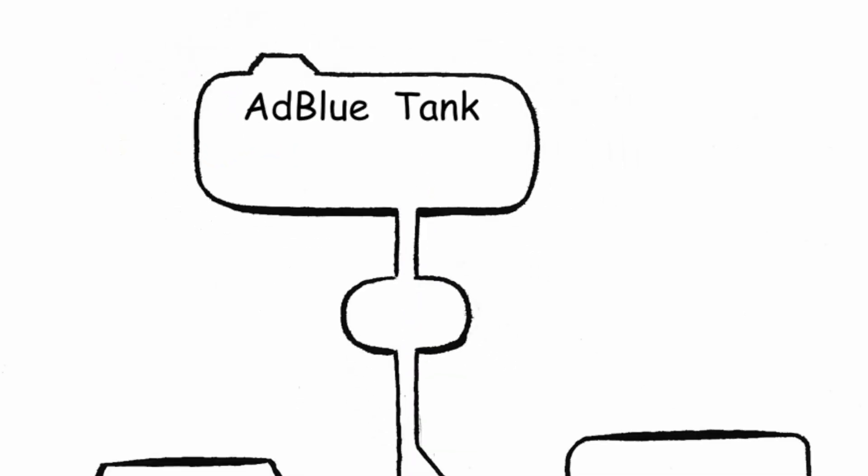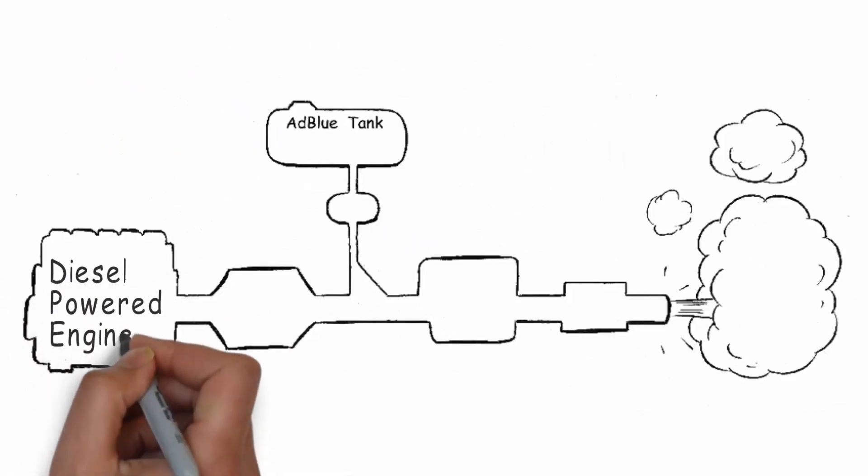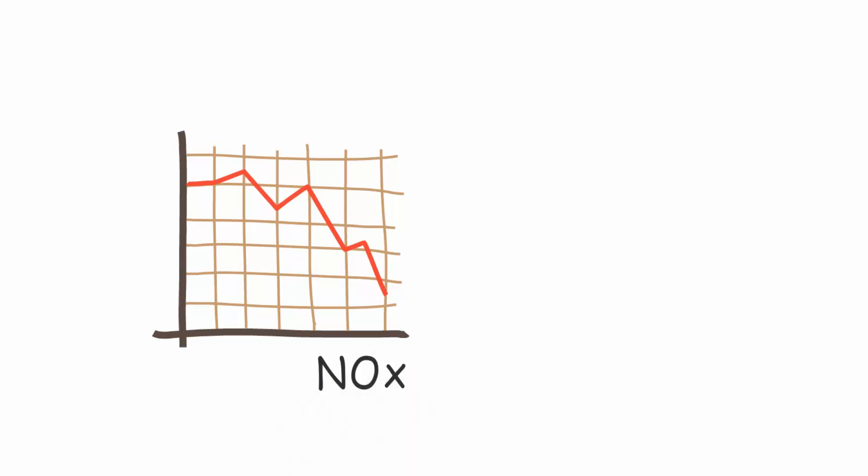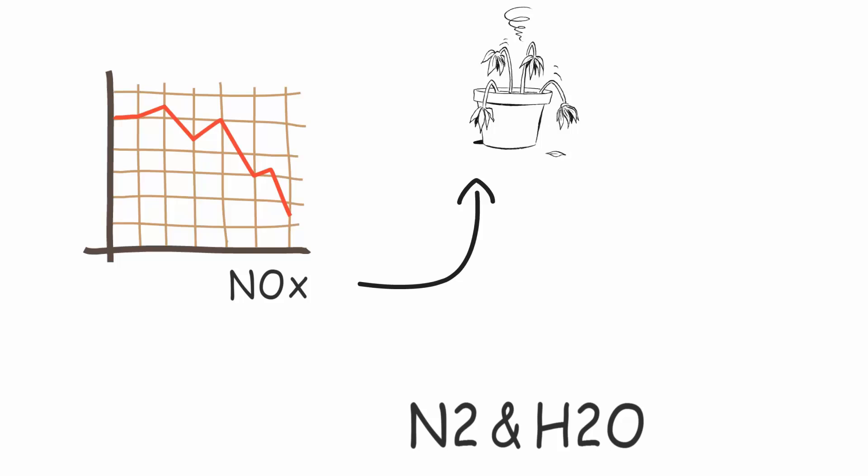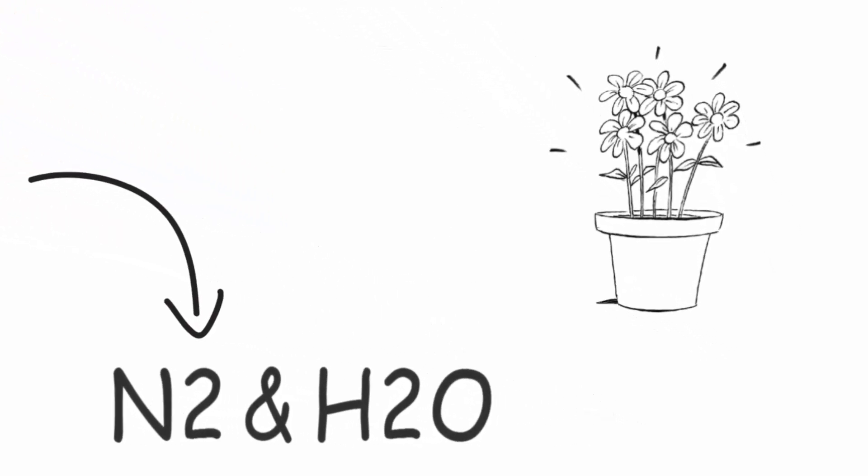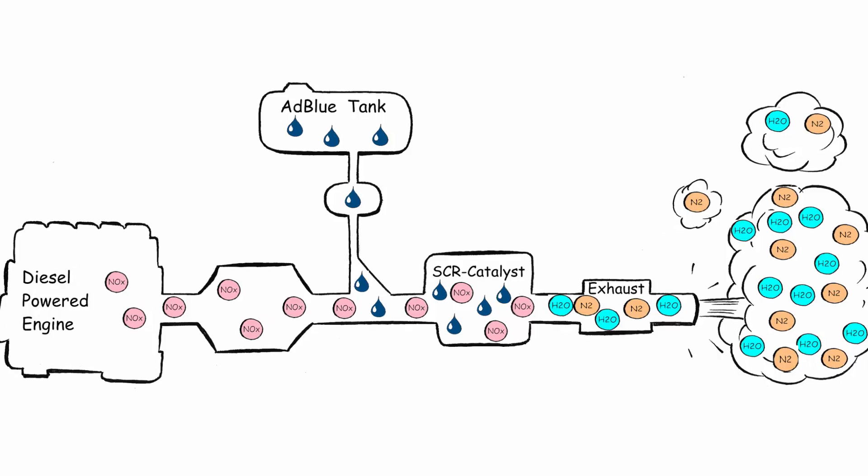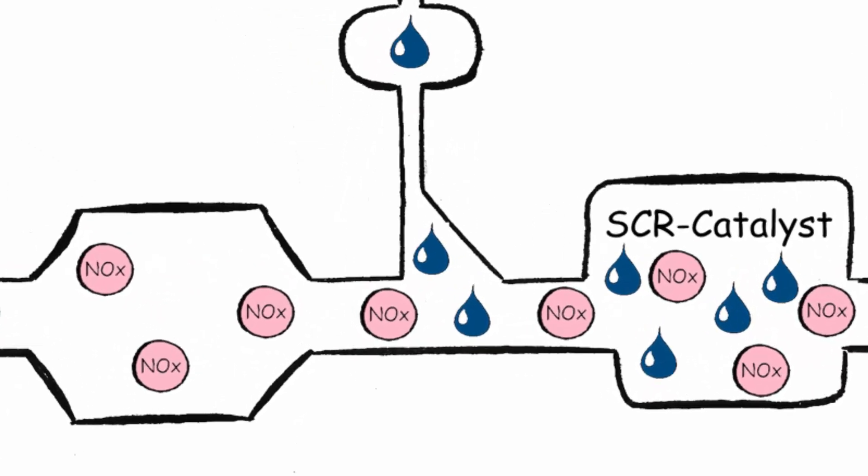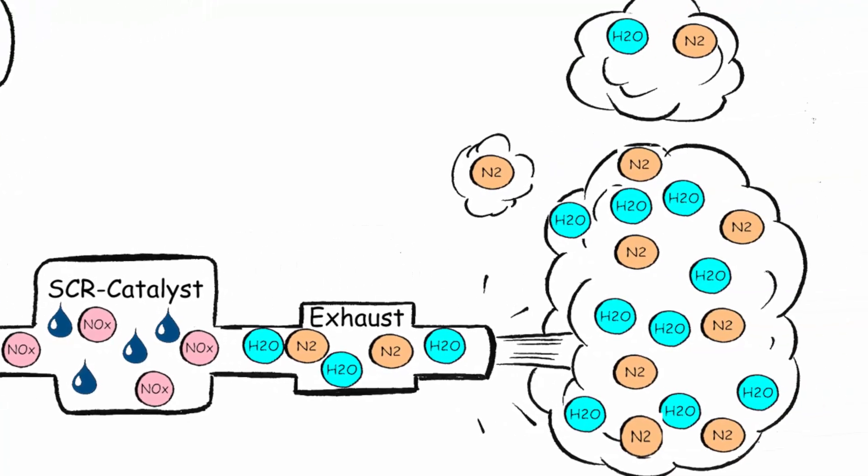AdBlue is injected into the exhaust emissions of a diesel-powered engine to reduce the harmful NOx emissions which cause damage to our environment into harmless nitrogen and water vapor. The exhaust gases mixed with the AdBlue vapor flow into a SCR catalyst where a chemical reaction takes place.